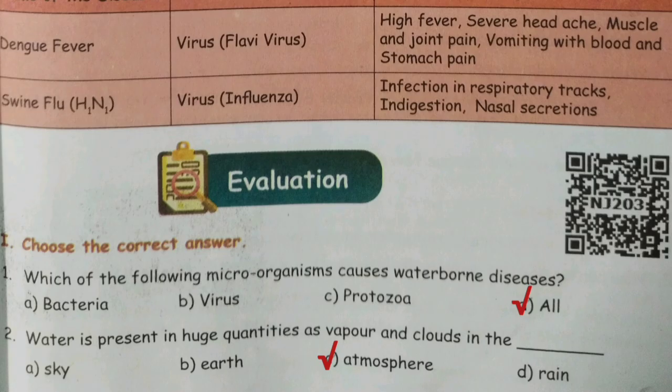Choose the correct answer. First one: which of the following microorganisms causes waterborne diseases? Answer: option D, All.